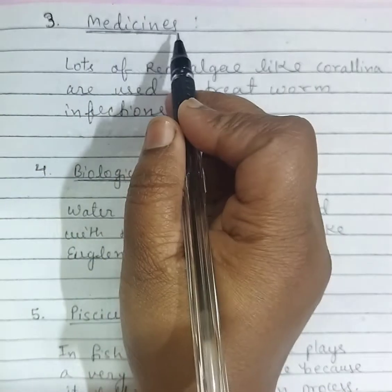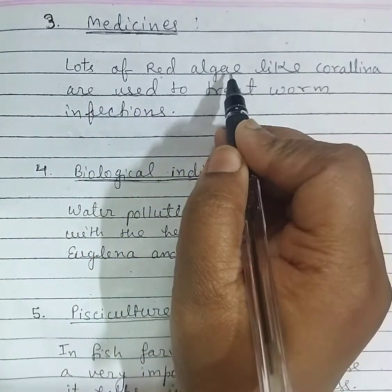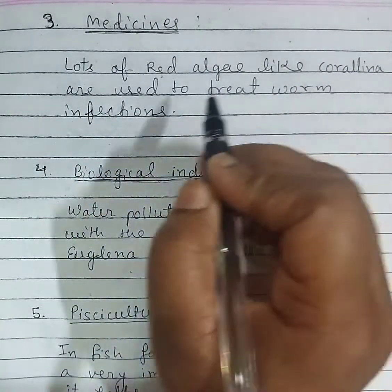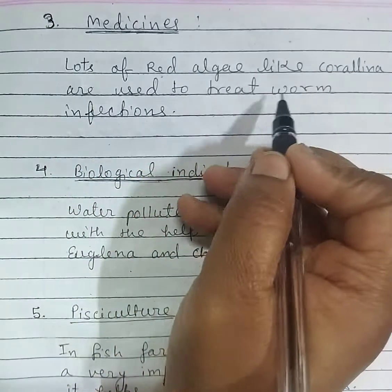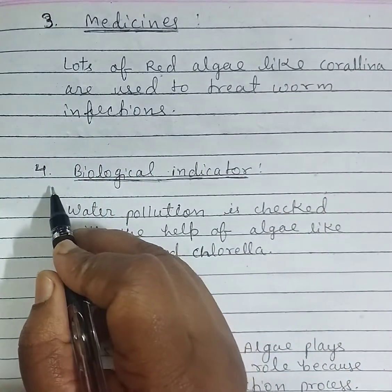Third is medicines. Lots of red algae like Corallina are used to treat worm infections.